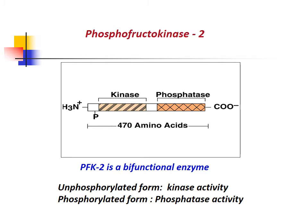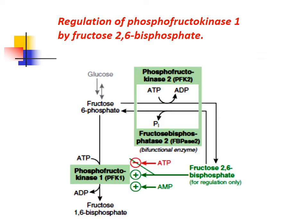PFK2 is a bifunctional enzyme. The unphosphorylated form has kinase activity; the phosphorylated form has phosphatase activity. Fructose-2,6-bisphosphate allosterically activates phosphofructokinase-1 and controls the flux through the glycolytic pathway.